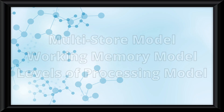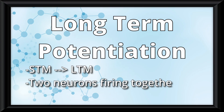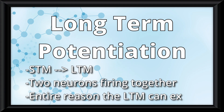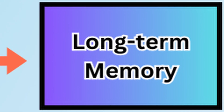Before I forget — long-term potentiation is the biological reason for why information goes from short-term to long-term memory. It is caused by two neurons firing together to make it more efficient. Long-term potentiation is the entire reason long-term memory can exist. But really quickly, let's zoom into the long-term memory.